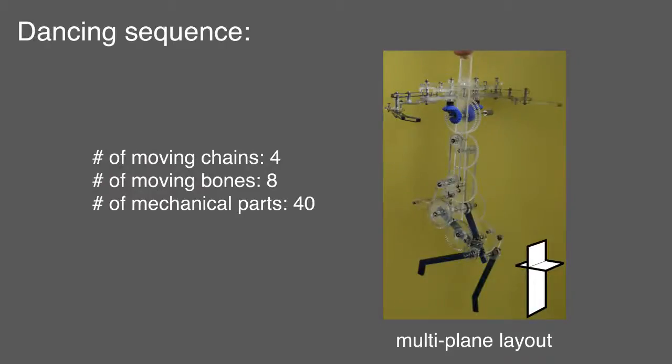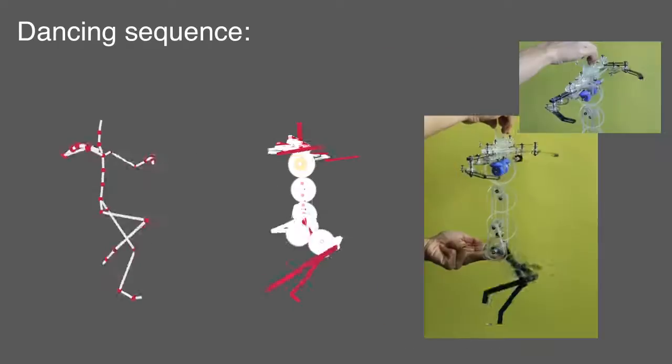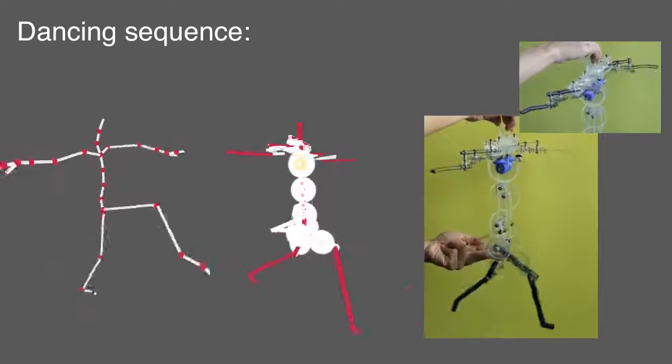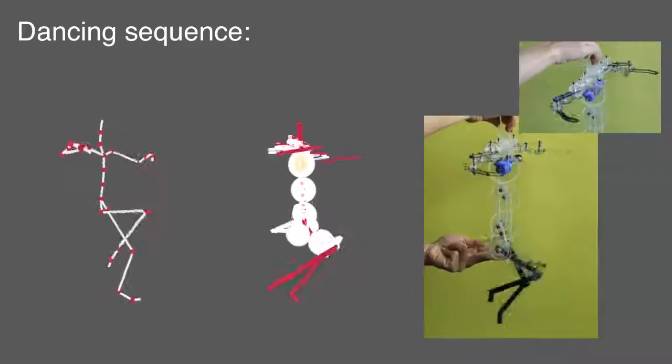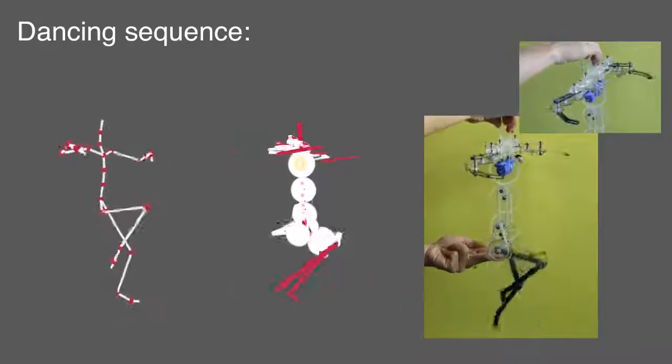In the dancing example, the motion of the arms and legs are projected to orthogonal planes. Bevel gears are used to convert the rotation of the input crank to the appropriate motion plane. The whole mechanism is driven by a single input motor.